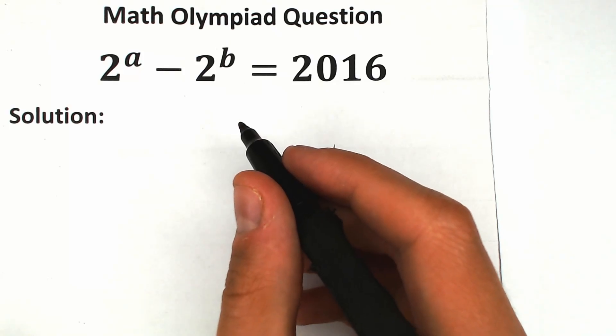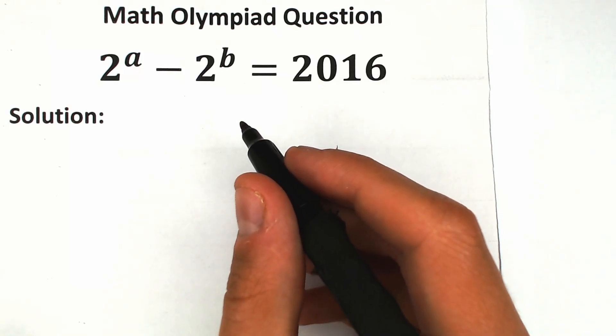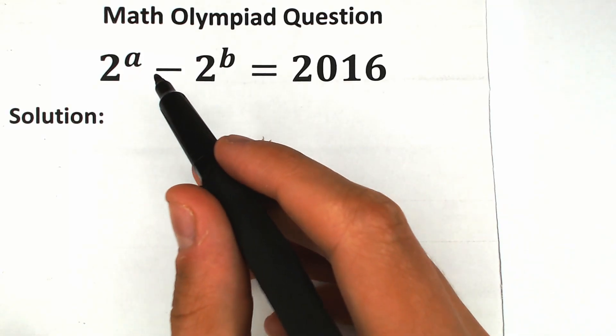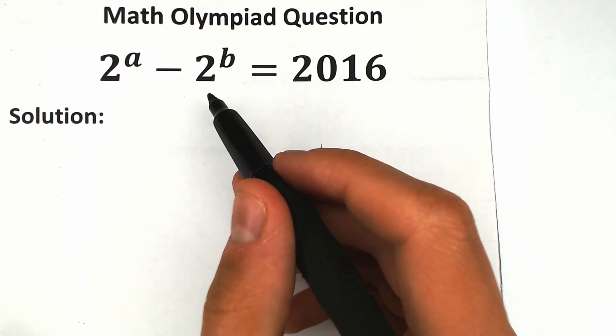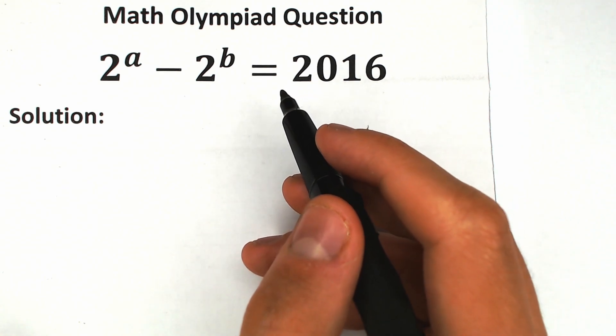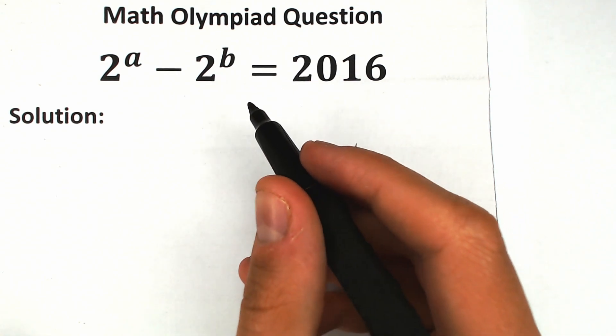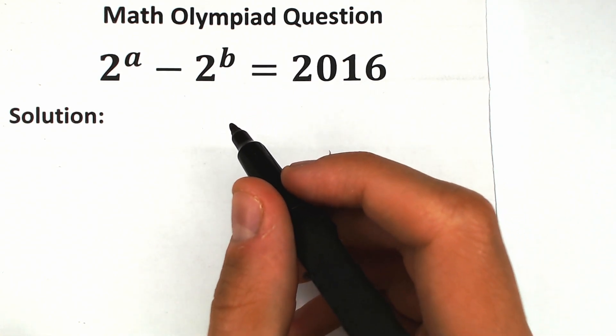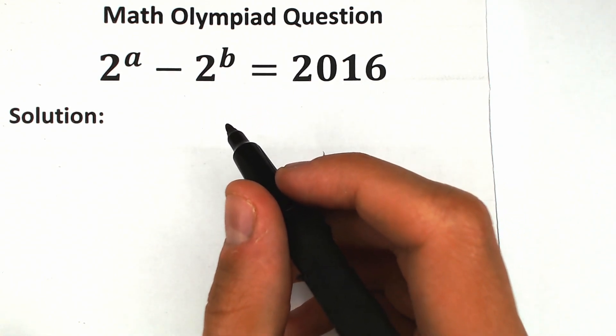Welcome back to my channel, Higher Mathematics, and a really interesting challenge today. 2 to the power A minus 2 to the power B equals 2016. How can you solve this question? In this video I'm going to fully explain how to do this step by step.